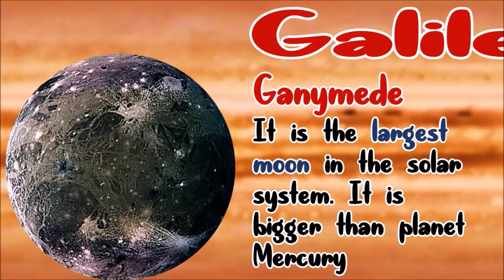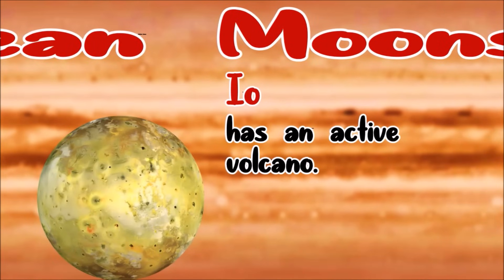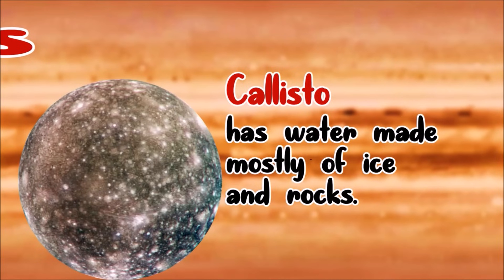Ganymede is the largest moon in the solar system. It is actually bigger than Mercury. Moon Io has an active volcano. Moon Europa has water made mostly of rocks and ice.